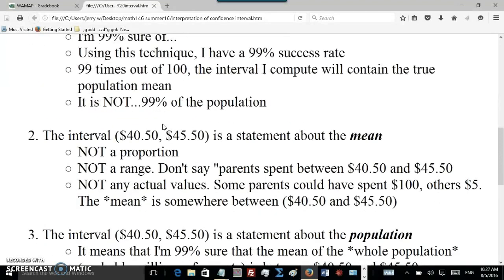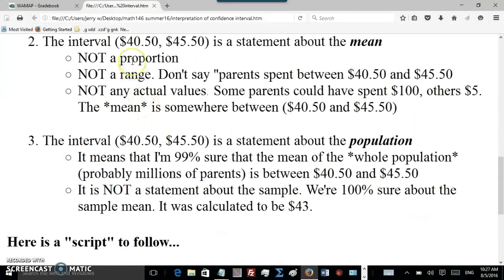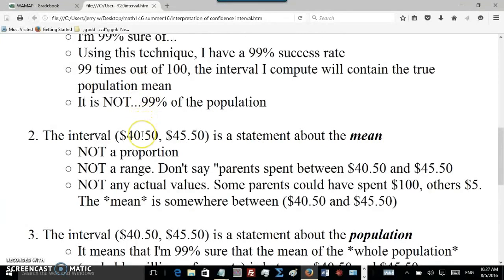Okay, the second point I want to make is the interval, the $40.50 to $45.50, is a statement about the mean. It's not a proportion. Some students said that 99% of the parents or something like that. This means that the population mean is somewhere in between these numbers. It's not a range. Don't say parents spent between $40.50 and $45.50. That's not what this is about either. In a sense, it's a range of possible values that we think the population mean might be, but it's not a range of actual values that parents actually spent.